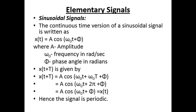Next, we have sinusoidal signals. The continuous time sinusoidal signal is written as x(t) = A·cos(ω₀t + φ), where A is amplitude, ω₀ is frequency in radians per second, and φ is phase angle in radians. Evaluating x(t + T): A·cos(ω₀t + ω₀T + φ) = A·cos(ω₀t + 2π + φ), since ω₀ = 2πf and T = 1/f. This equals x(t), confirming the signal is periodic with fundamental period T = 2π/ω₀.